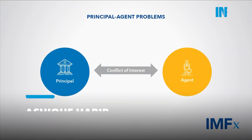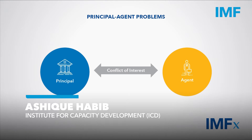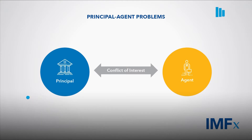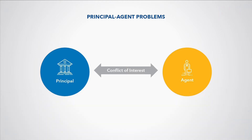Principal agent problems are common in finance and describe conflicts of interest between financial service providers, such as lenders and insurance companies, and their clients. There are two important types of principal agent problems: adverse selection and moral hazard.